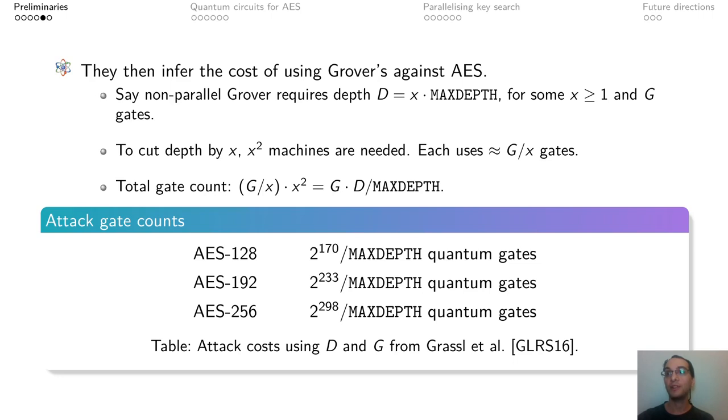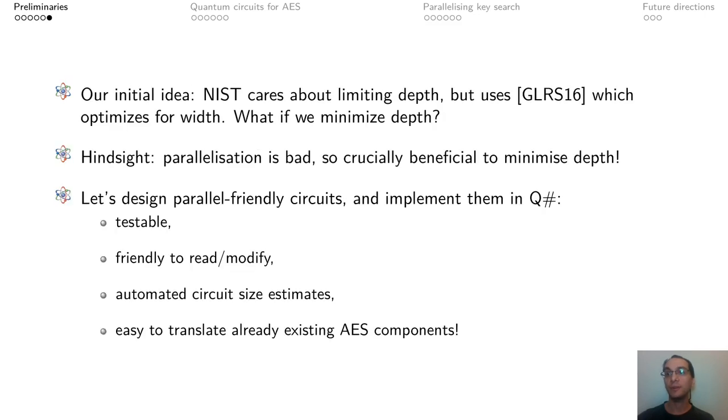They pick values D and G from Grassl et al., and obtain the table presented in this slide, that represents the gate cost of running parallel Grover's search against AES. Our idea was the following.